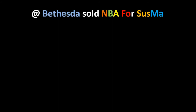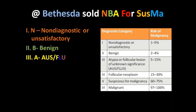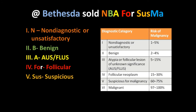N from NBA stands for non-diagnostic or unsatisfactory cytology; B is for benign cytology; A is for atypia or follicular lesion of unknown significance; F is for follicular neoplasm; SUS is for suspicious malignancy; and MA is for malignant cytology.